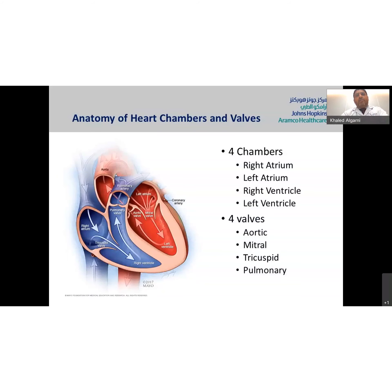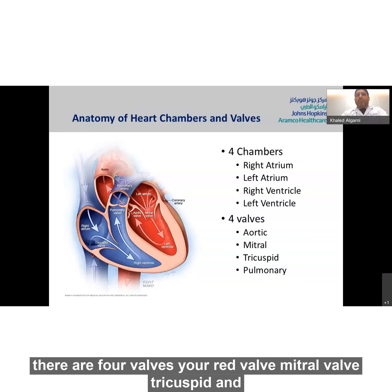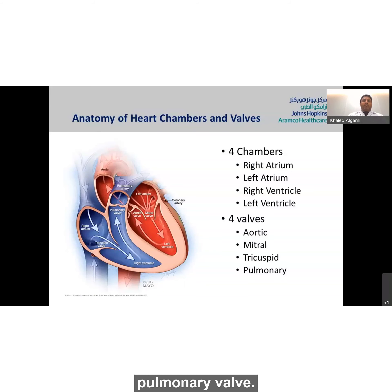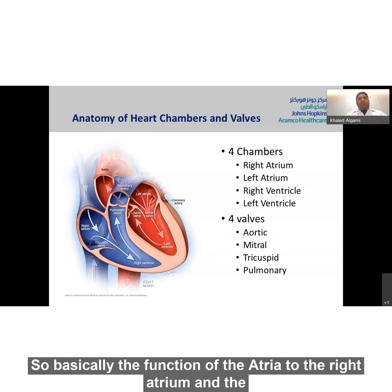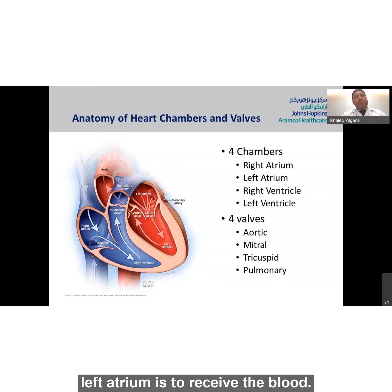There are four valves: aortic valve, mitral valve, tricuspid, and pulmonary valve. The function of the atria — which is the right atrium and the left atrium — is to receive the blood.